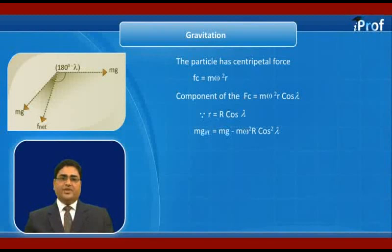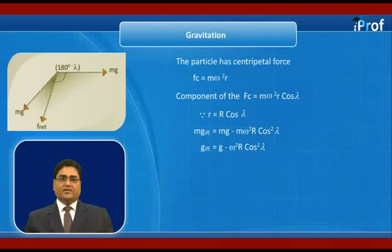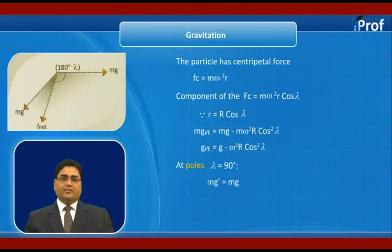So we can write: m g_effective = m g − m omega² R cos² lambda. At pole, lambda is 90 degrees, so cos 90° = 0. Therefore g_effective equals g, and apparent weight m g_effective equals actual weight m g.